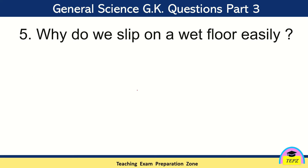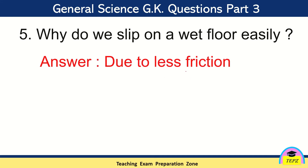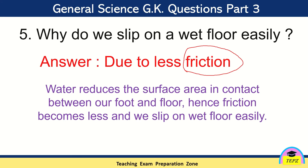Why do we slip on a wet floor easily? Due to less friction. Frictional force is a force which resists the motion of objects. Because of water, the surface area in contact between the foot and the floor decreases, and because of that friction also decreases — and so we slip on the wet floor.